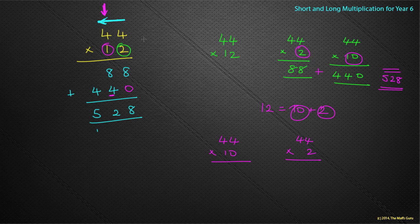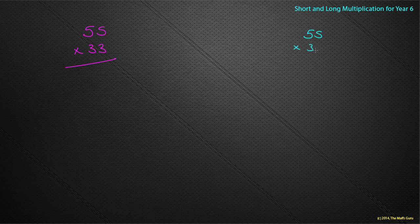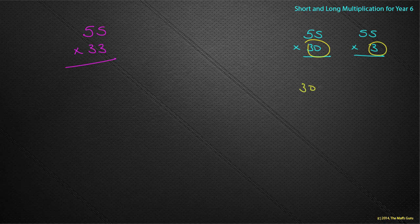So you already know, using mental methods, how to do this. You could probably do it in your head using the practice from before. Another example: 55 times 33. What we're actually going to work out is 55 times 30 and 55 times 3. Why? Because 30 plus 3 is 33 — we're just splitting it up.